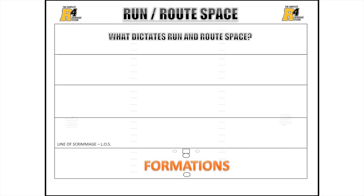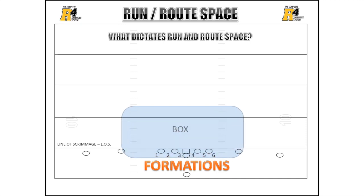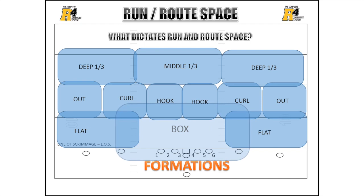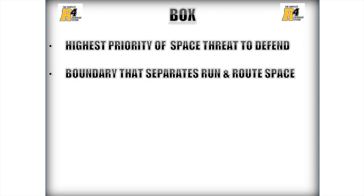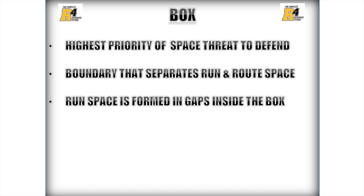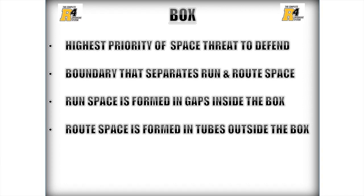Run and route space is dictated by formations. Formational run space is located in the area called the box, and then branches out to different areas of route space outside the box. Traditional teaching methods break up route space into 11 different areas based on location. The run box is the highest priority of space threat to defend, because running the ball into open space is the easiest way to move the ball for the offense. The box is the boundary that separates run and route space — an important frame of reference to determine where space advantage is located. Run space is formed in gaps inside the box; route space is formed in tubes outside the box. The box is formed by the number of gaps in the formation.